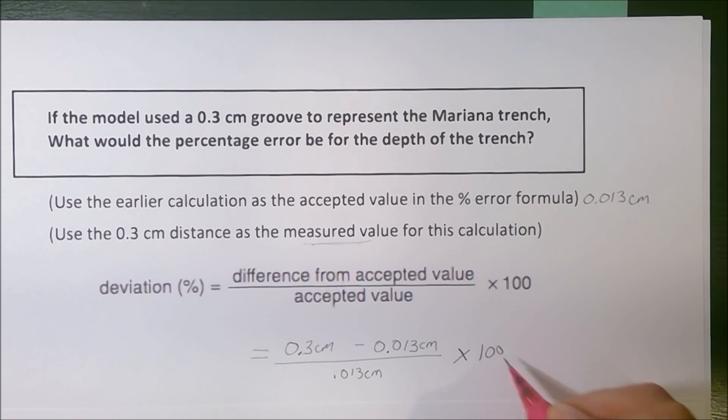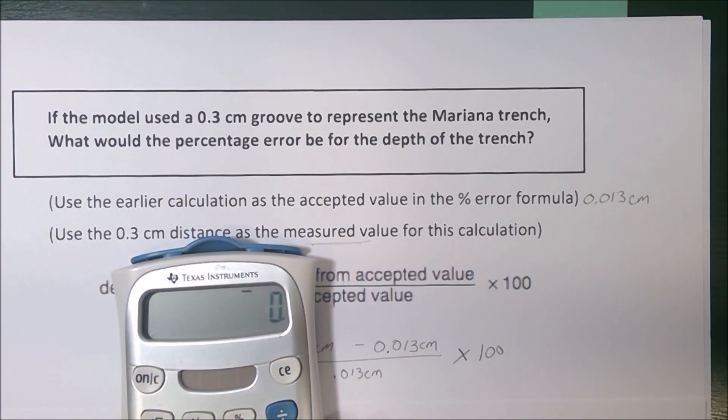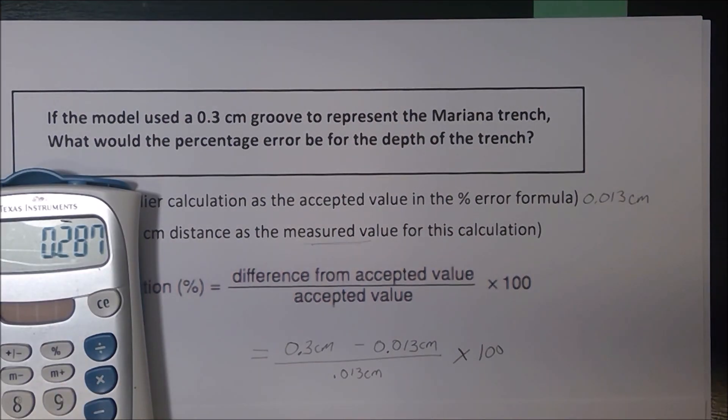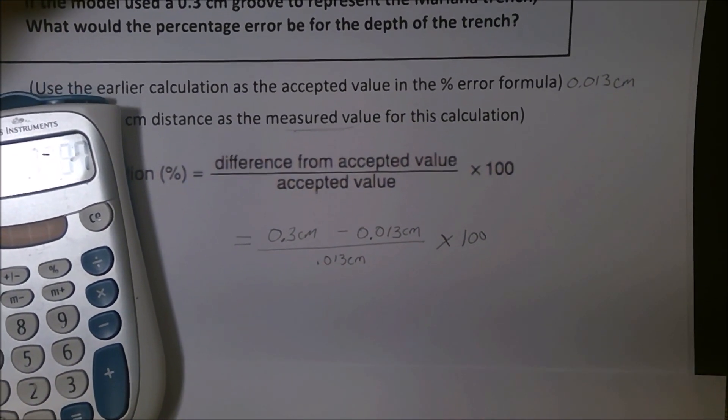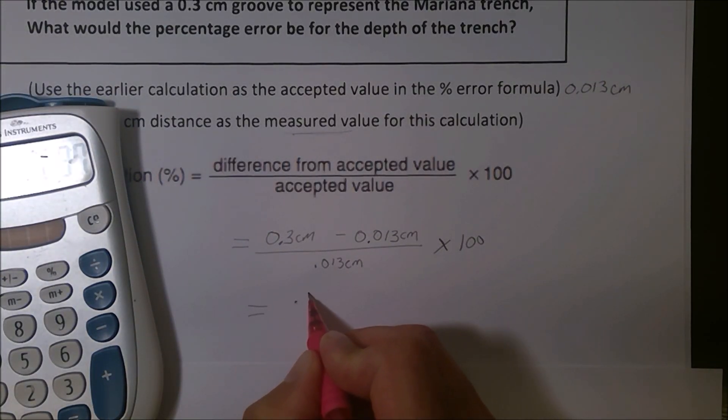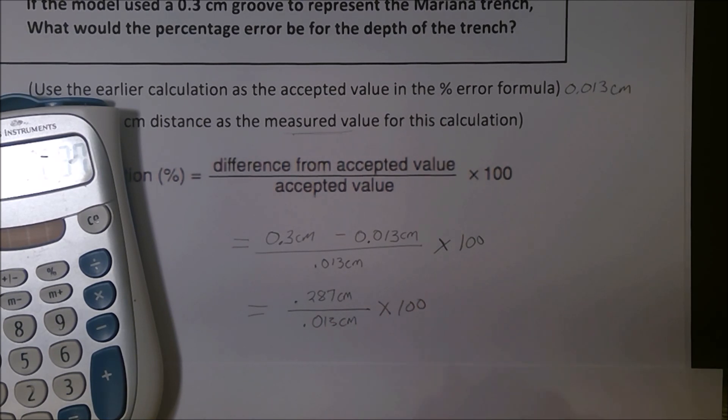When I go to do this, the difference 0.3 centimeters is the size they used minus 0.013 centimeters, which is what it should have been to scale. That's going to be 0.013 centimeters is going to be the actual value. And don't forget to multiply by 100. So 0.3 minus 0.013 gives me 0.287.